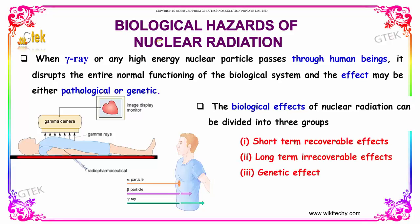Let's talk about the biological hazards of nuclear radiation. When a gamma ray or any high energy nuclear particle passes through human beings, it disrupts the entire normal functioning of the biological system, and the effect may be either pathological or genetic.